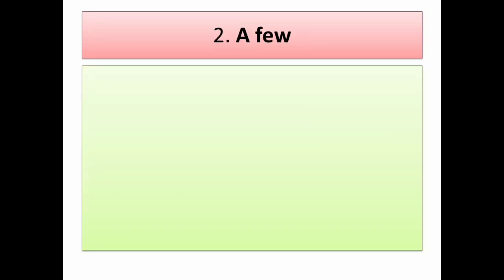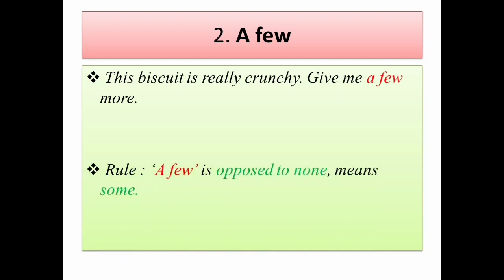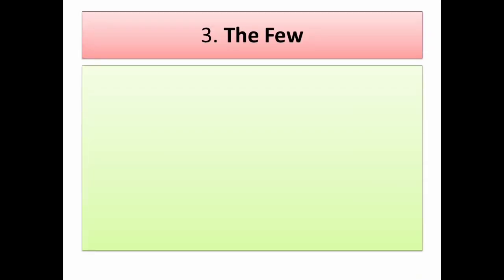Now let's come to 'a few.' Example: 'This biscuit is really crunchy — give me a few more.' Because the speaker liked the biscuit, he wants a few more — some more biscuits. So the rule is: 'a few' is opposed to none. In contrast to 'few,' which means almost none, 'a few' means some — at least some amount.